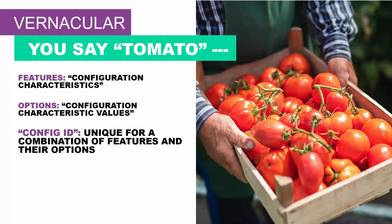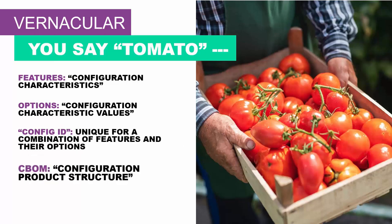Every configuration of your product represents a selection of configuration characteristics and configuration characteristic values. Each different combination is assigned a unique identifier called a configuration ID. The configuration ID is assigned during the configuration dialog where you choose characteristic values. To be meaningful to back office, engineering, procurement, and manufacturing, you may define a matrix product structure — also known as a super bill — which we call a configuration product structure or CBOM. You may also define a super router. This is just an introduction to these terms; I'll elaborate on them later.